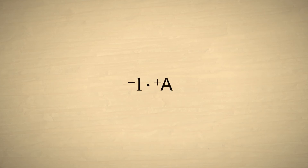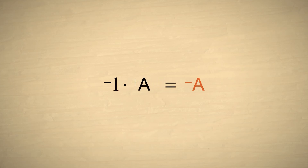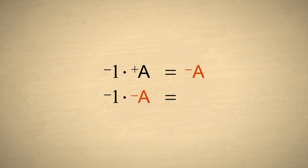There is another interesting trick which can come in handy. Multiplying any positive number, which we will call A, by negative 1 switches its sign to negative. Likewise, multiplying any negative number by negative 1 will switch its sign to positive.